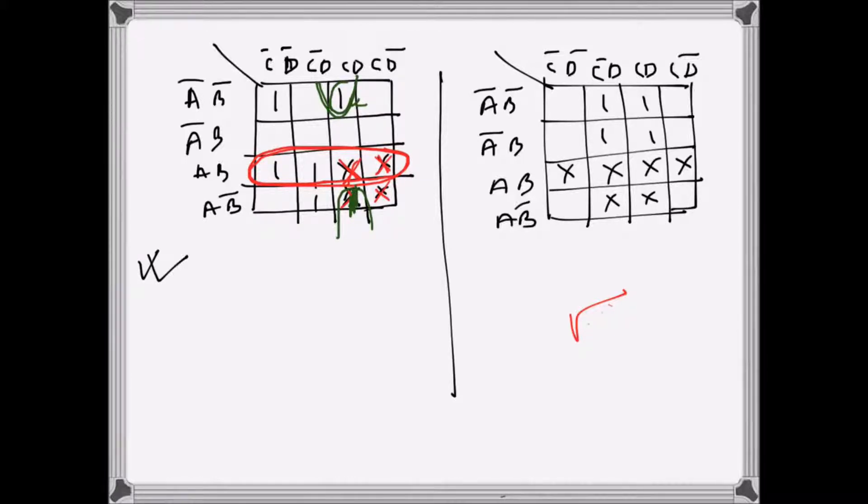So for the red one, the expression will be AB. The green one, the expression will be B bar and then CD. And then I still have this one left, this one and this one.